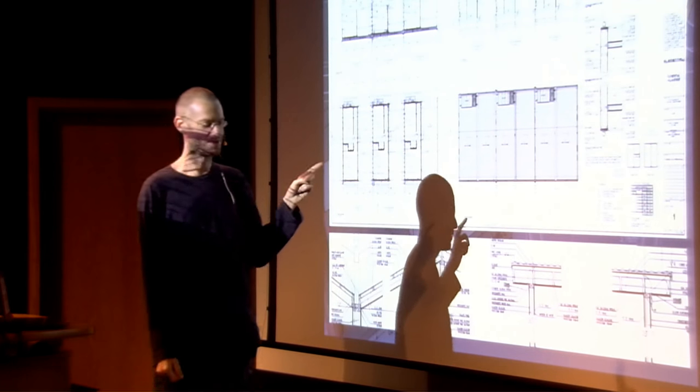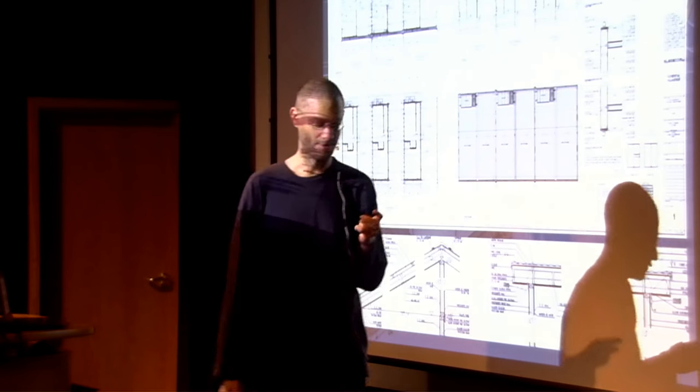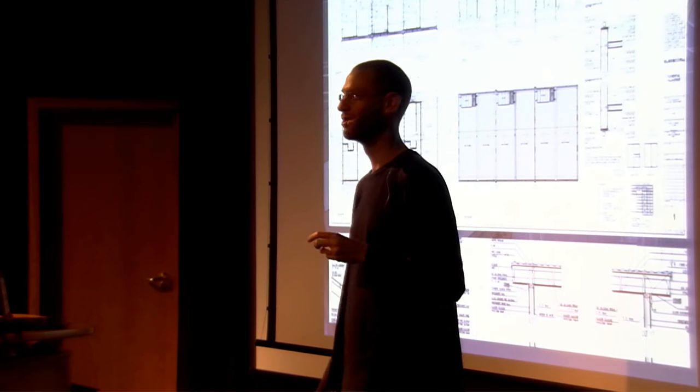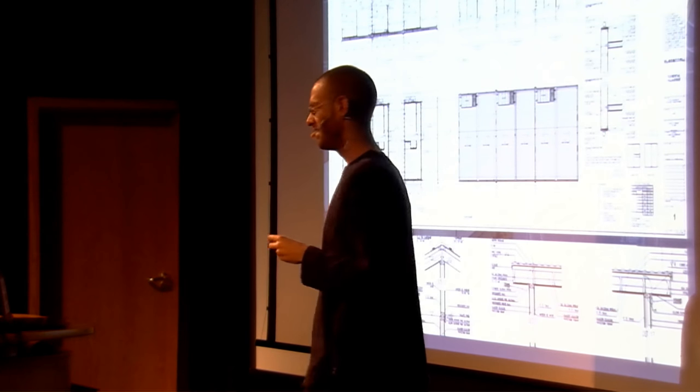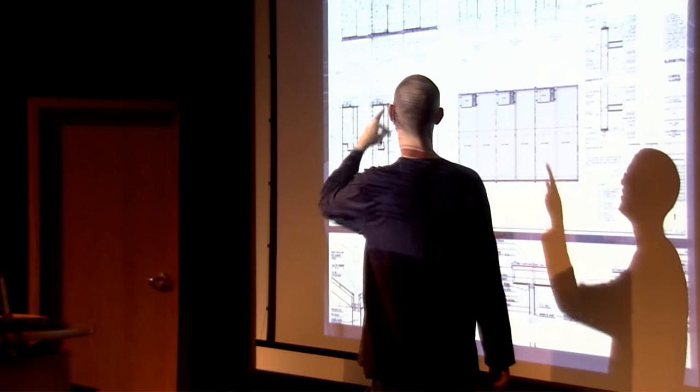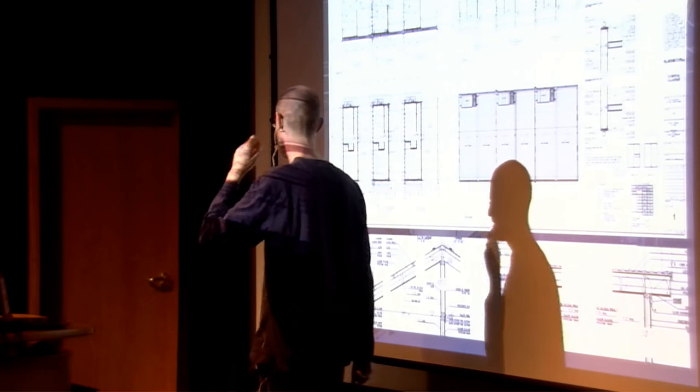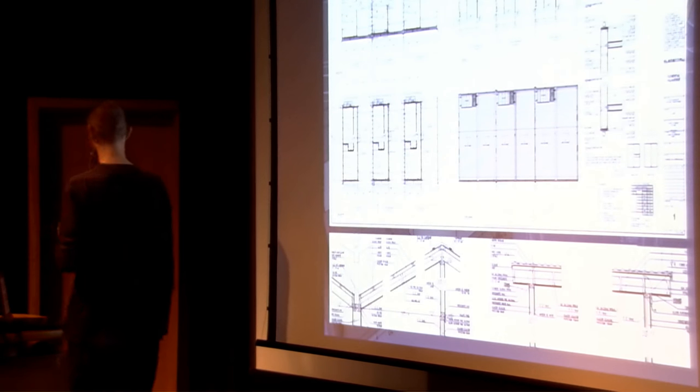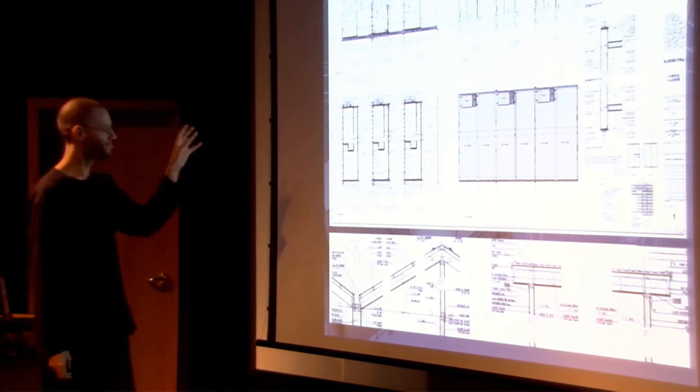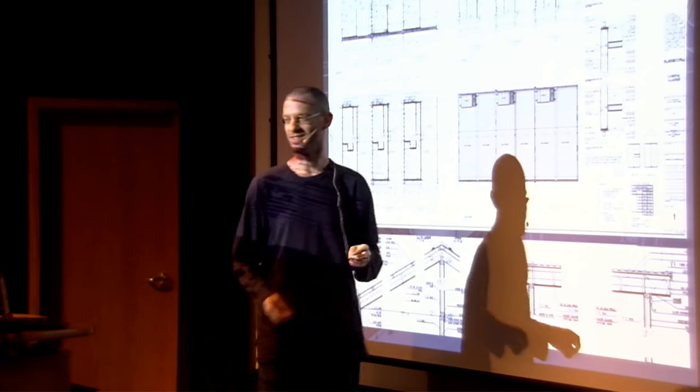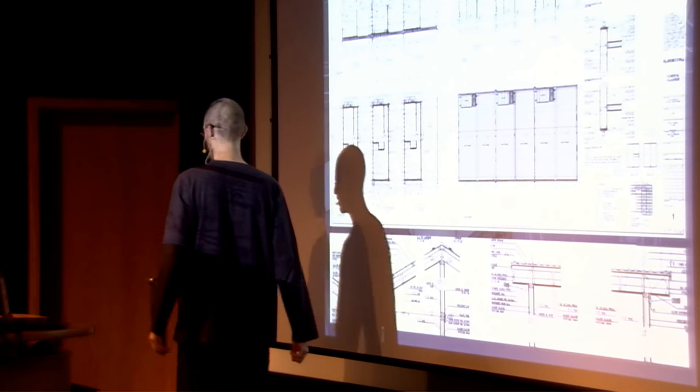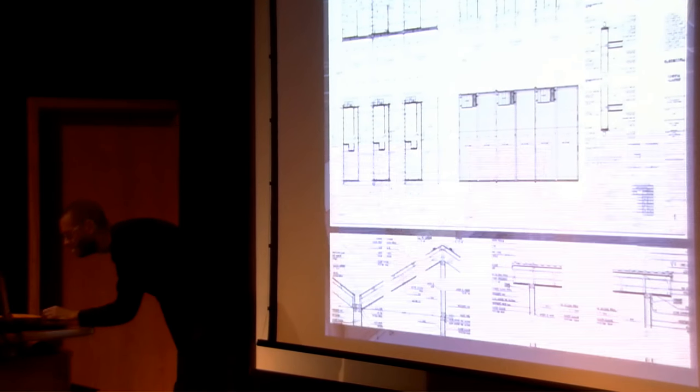These drawings are from Alejandro Aravena, who just won the Pritzker Prize, which is the Nobel Prize of Architects. These are his famous projects, a popular house for poor people who don't have a lot of money. He built this project, which is a half good house. That's the idea of it. And this is fully open source now. You can find it online.